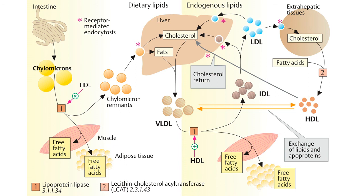Note — if removal of remnants by the liver is decreased due to impaired binding to their receptor, they accumulate in the plasma. This is seen in the rare type 3 hyperlipoproteinemia, also called familial dysbetalipoproteinemia.